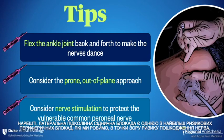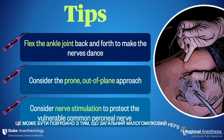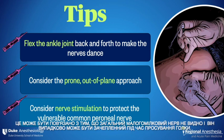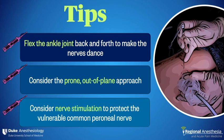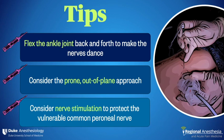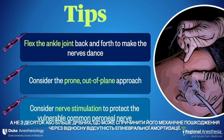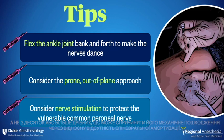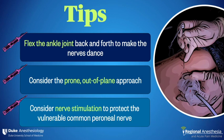Lastly, the lateral popliteal sciatic block is one of the higher-risk peripheral blocks we do from the perspective of nerve injury. This may be because the common peroneal nerve is not seen and is accidentally contacted as the needle is advanced. We do know the common peroneal nerve typically comprises two to three large fascicles rather than a dozen or more smaller ones, which may predispose it to mechanical injury due to the relative lack of epineural cushioning. Nerve stimulation is a useful adjunct for this block that may give you an early warning of inadvertent needle-nerve contact.